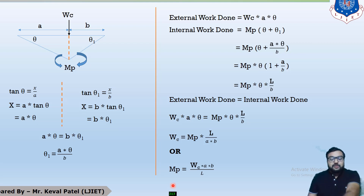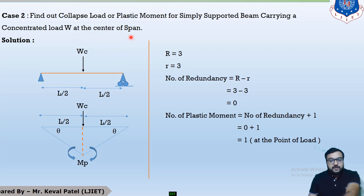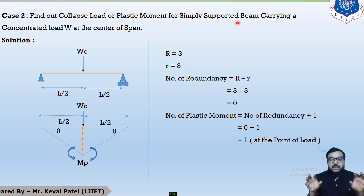Now we are moving to the next derivation. The next derivation is to find out the collapse load WC or plastic moment MP for a simply supported beam carrying a concentrated load — also called a point load — at the center of the span. As it is written in the question, the beam is a simply supported beam, so both ends are simple supports: the left support is a hinge support and the right support is a roller support.